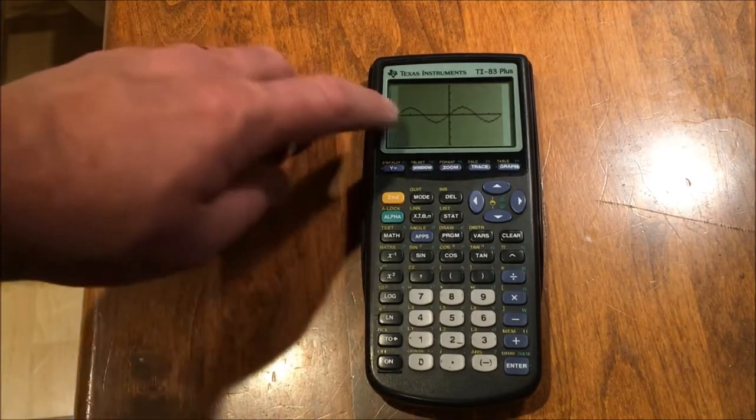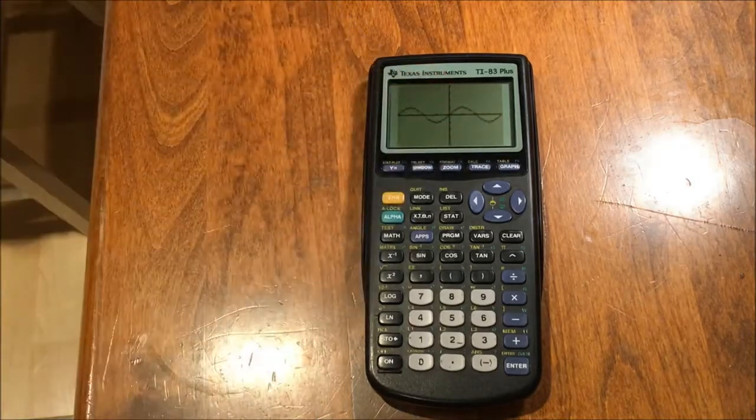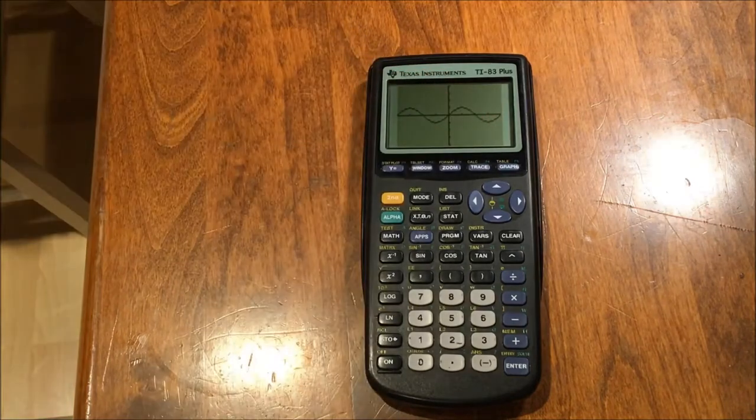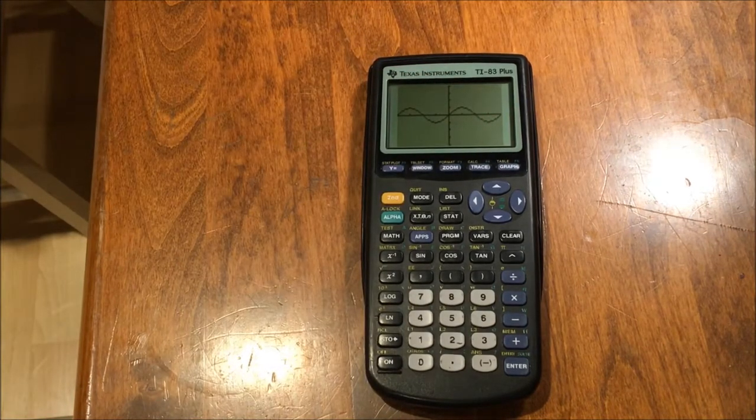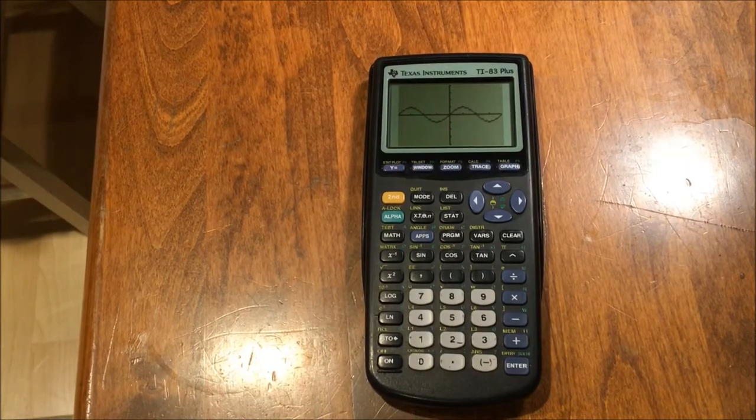Now, look at the tick marks. The tick marks, there are three on each side. These represent pi over two, pi, three pi over two, and two pi is the edge of the screen in either direction. This is how we do the graphing of trig functions.